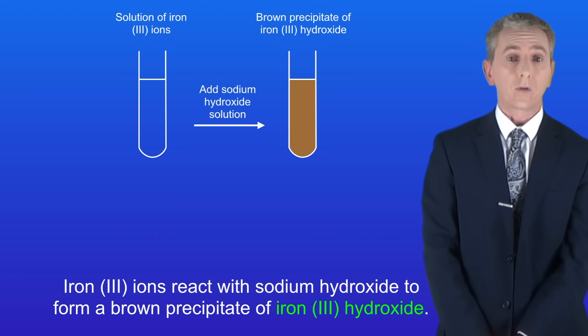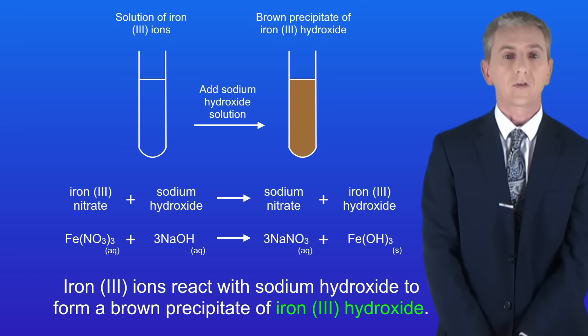And finally, iron 3 ions react with sodium hydroxide to form a brown precipitate of iron 3 hydroxide. And again, here's the equation.